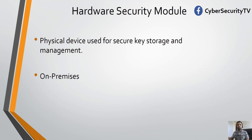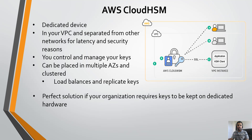Now when we move to AWS, the HSM remains the same. The only part that changes is it becomes the Cloud HSM. That's what AWS has — they offer the Cloud HSM. It's a dedicated device in your VPC, separated from other networks for latency and security reasons.